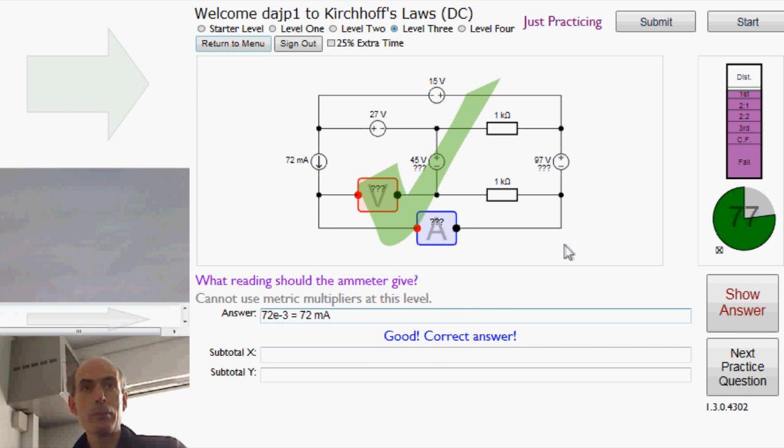72 milliamps. Simple. They're not all easy like that, but sometimes they are. I think that's probably enough for level 3. Good luck.